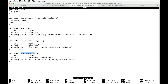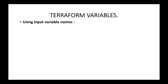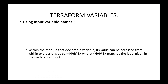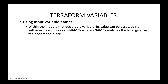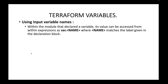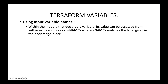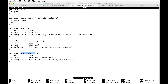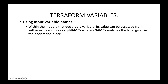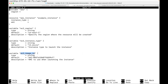Once you're done declaring these variable blocks, how do we call these variables within your resource block or within a provider block? Within the module where you declared a variable, the value can be accessed from within expressions using var.name. Here, var is the key and the name is simply the label or the variable name that you have given in the variable block.